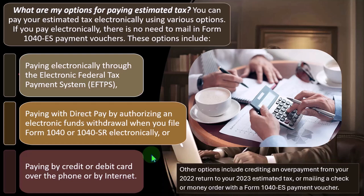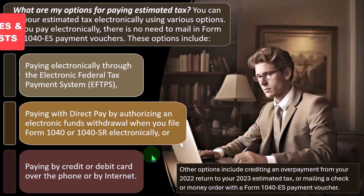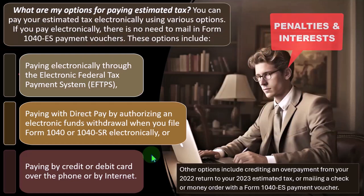We then make quarterly payments during 2024, which are usually scheduled and calculated based on the prior year tax software. This system works generally fairly well and helps us meet safe harbor requirements to hopefully avoid or minimize the chance of getting hit with penalties and interest.